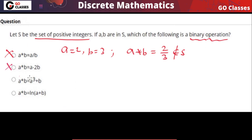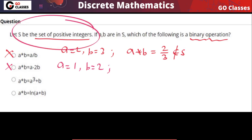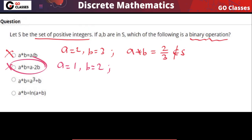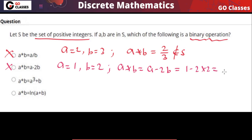This next one is also not a binary operation. If you take a = 1 and b = 2 — remember, every value you take must come from the base set, which is the set of positive integers. Applying a★b = a − 2b gives 1 − 2(2) = −3, and this does not belong to our set of positive integers. So this operation is also not closed.